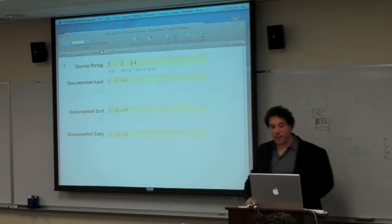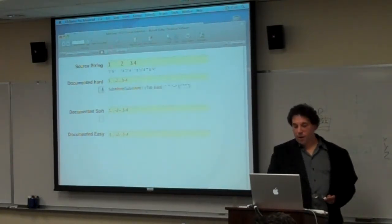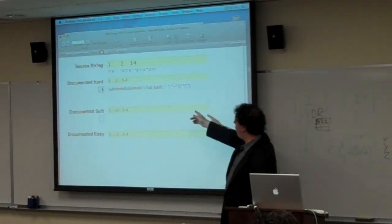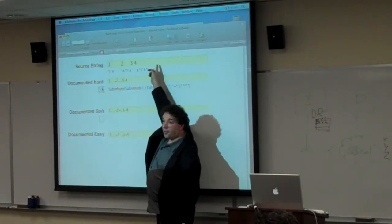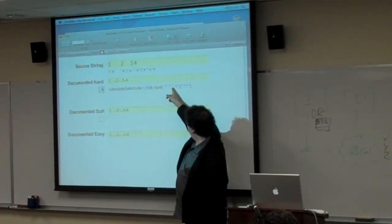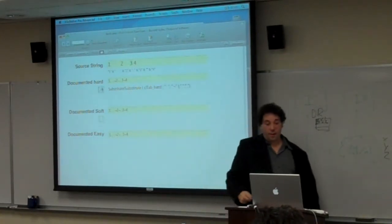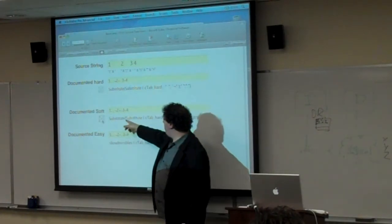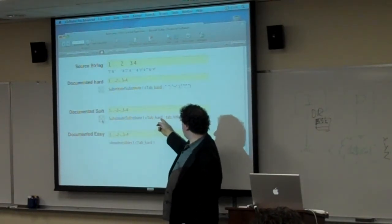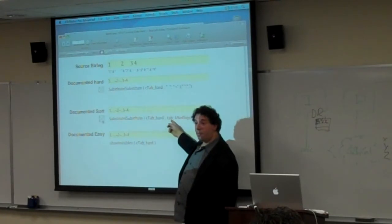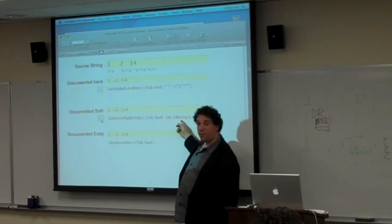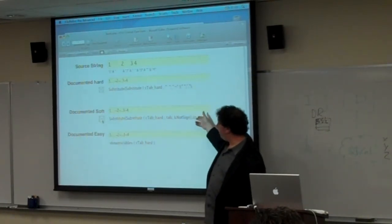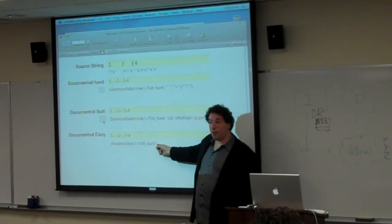So if we want to document it, here's one way of doing it, where we just explicitly do substitutes. This c tab part is this guy up here. Where we, you know, do the substitutions this way. Here's what I call documented soft, where we're still doing a double substitute, but we're now using our tab custom function and our do not sign custom function. And the space and period. So this is more readable than this. But this is way more readable.